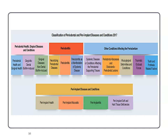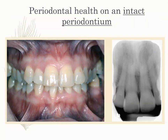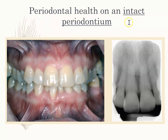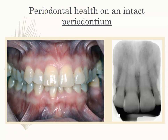Looking at images: this is a healthy mouth — coral pink, nice and tight. There would likely be no bleeding on probing. This is someone who has periodontal health on an intact periodontium. Intact means no recession and no bone loss — this is the perfect periodontal health on an intact periodontium.